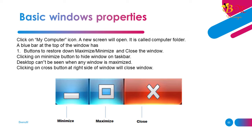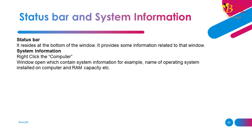Basic Windows properties: Click on the My Computer icon — a new screen will open called the computer folder. A blue bar at the top of the window has buttons to restore down, maximize/minimize, and close the window. Clicking the minimize button hides the window on the taskbar. The desktop cannot be seen when any window is maximized. Clicking the close (X) button at the right side of the window will close it. Status bar resides at the bottom of the window and provides information related to that window. Right-clicking the computer window opens system information, for example the name of the operating system installed and RAM capacity.